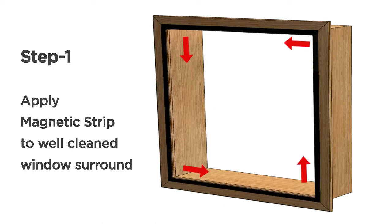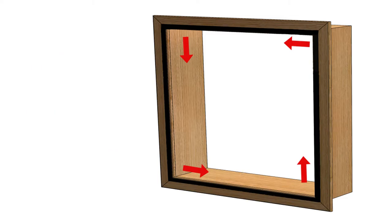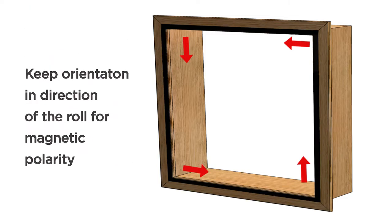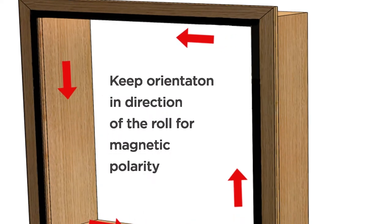Step one, clean area from dirt and grease. Apply magnetic strip to the window surround. Apply directly from the roll, keeping the same orientation as it comes off the roll.